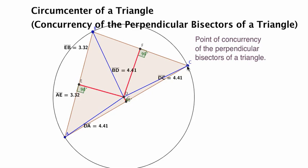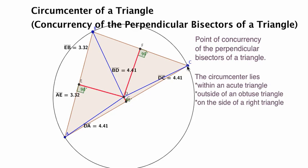Second, the circumcenter lies within the triangle for acute, outside of the triangle for obtuse, and on the side of the triangle for all right triangles.